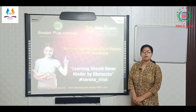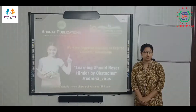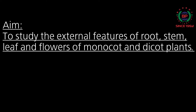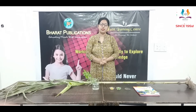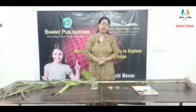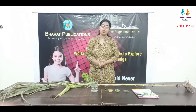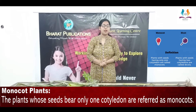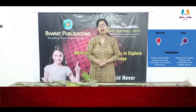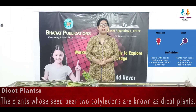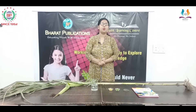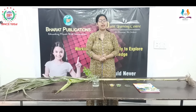Hello students, today we are going to start a new activity. Its aim is the study of the external features of the root, stem, leaf, and flower of monocot and dicot plants. Monocots are plants in which seeds have only one cotyledon, and dicots are plants in which seeds have two cotyledons. This is the basic difference, but today I will tell you further differences between monocot and dicot plants.